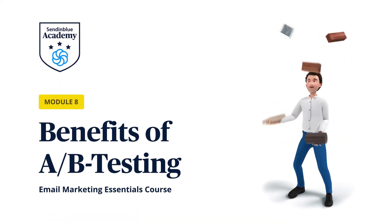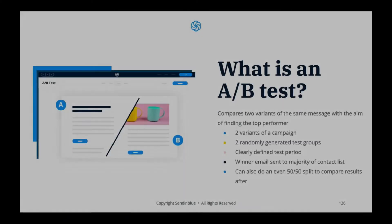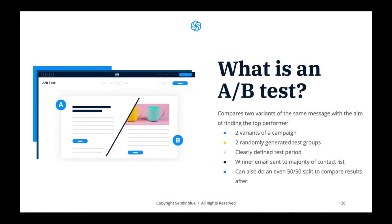Benefits of A-B testing in email marketing. First of all, what is an A-B test? An A-B test is a simple way to test two different versions of the same message so that you can identify which version performs the best according to the KPI that you want to follow — for example, open rate or click rate.